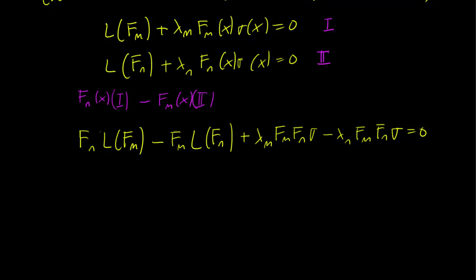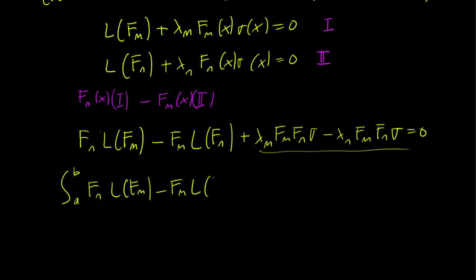We move the lambda terms to the right and integrate both sides. On the left side we have the integral from a to b of F_n * L(F_m) minus F_m * L(F_n) dx, and on the right side we obtain lambda_n * F_m * F_n * sigma minus lambda_m * F_n * F_m * sigma dx.